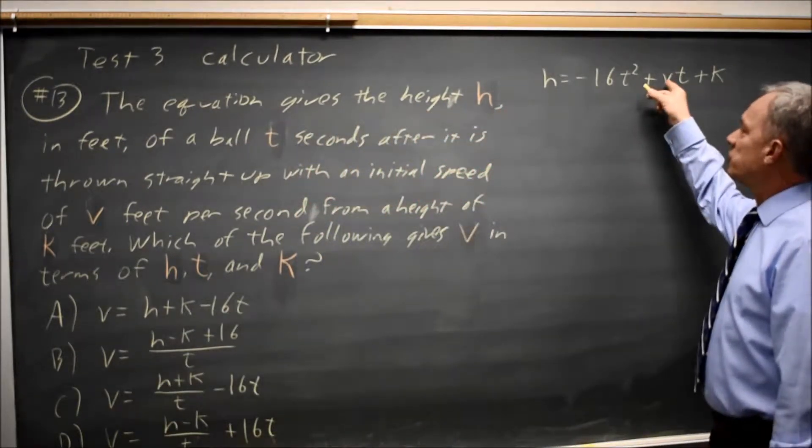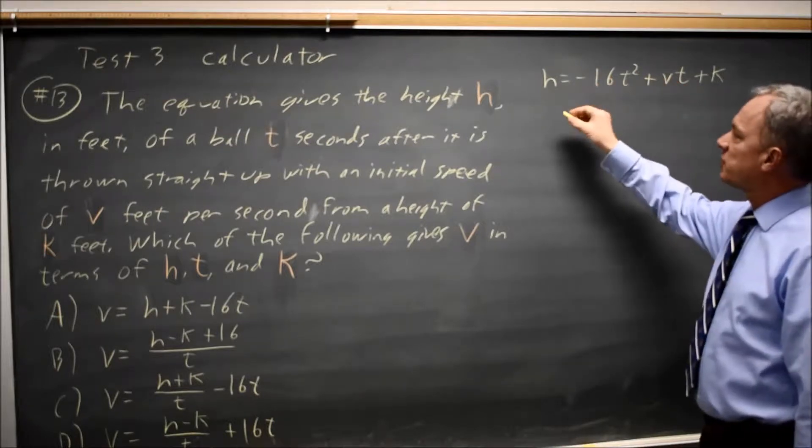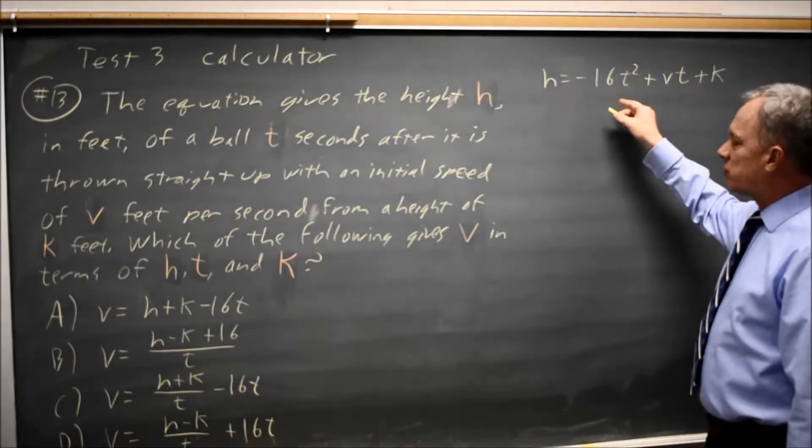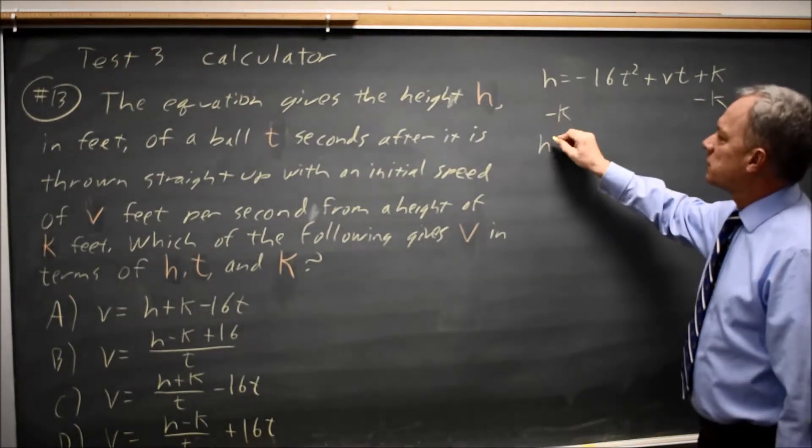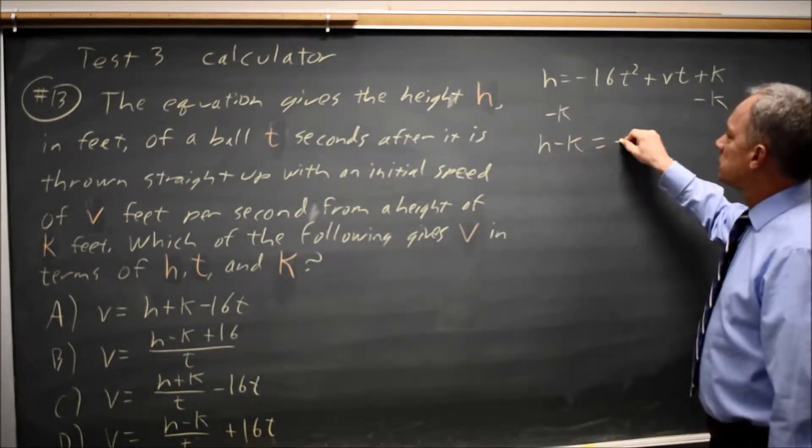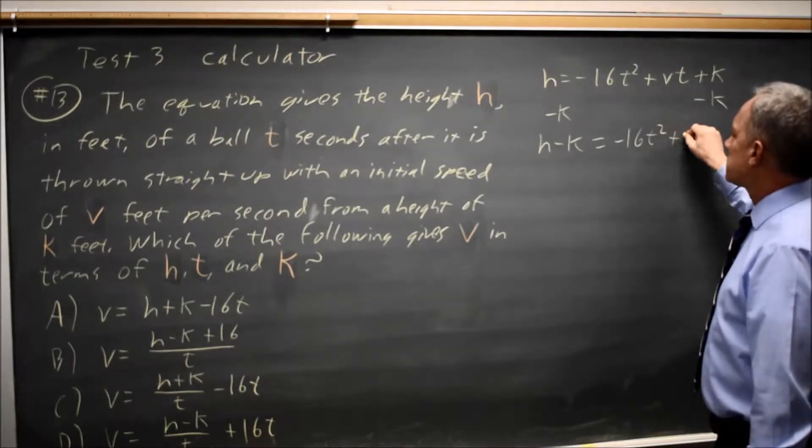To solve for v, I'll move the other two terms to the left-hand side. So if I subtract k from both sides, I get h minus k equals negative 16t squared plus vt.